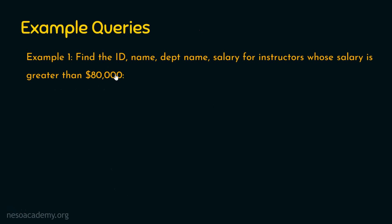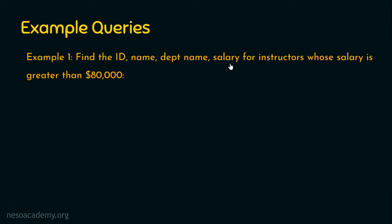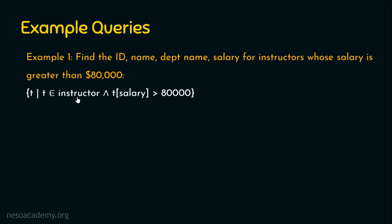Question number one: find the id, name, department name, and salary for instructors whose salary is greater than $80,000. In our example table we have only four columns: id, name, department name, and salary. So we are going to retrieve all columns from the table where the salary of the instructor is greater than $80,000. We need to understand whether we are retrieving all columns or selected columns. We are retrieving all columns, and the output is going to be rows because we are dealing with tuple relational calculus. The answer is the set of all tuples t such that this tuple belongs to the instructor table.